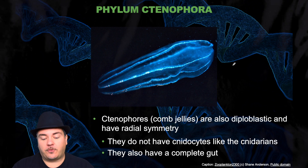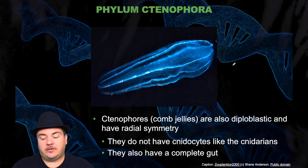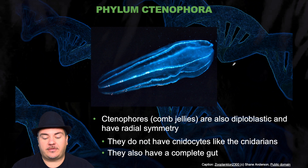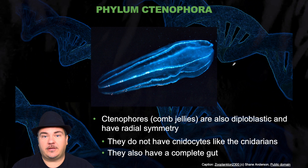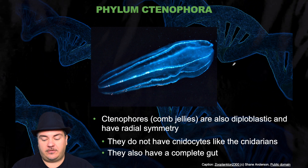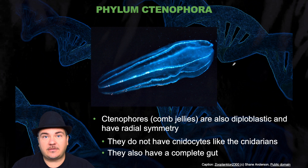The next phylum is Ctenophora — these are comb jellies. They're also diploblastic and have radial symmetry. They do not have cnidocytes like cnidarians, so they don't have stinging cells. They also have a complete gut.